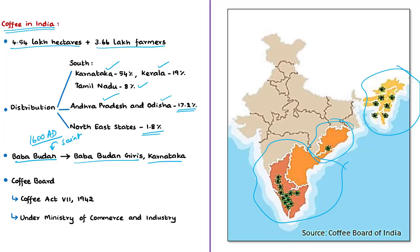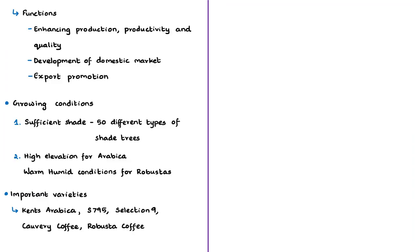Since then, the coffee industry in India has made rapid advancements. During the 1940s, the coffee industry was in a desperate state due to very low prices caused by World War II and devastation from pests and diseases. To ensure better management of the coffee sector, the Coffee Board was established under the Coffee Act 7 of 1942. The Coffee Board functions under the Ministry of Commerce and Industry and is headquartered at Bengaluru. It serves as a friend, philosopher, and guide to the coffee sector, focusing on enhancement of production, productivity, quality, domestic market development, and export promotion.